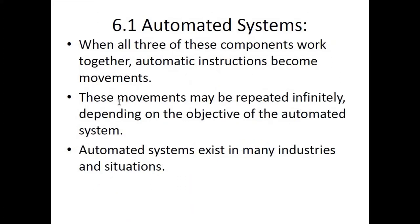When all three components work together, automatic instructions become movement, and these movements may be repeated infinitely depending on the objective of the automated system. For example, if it is built for packaging processed goods in a factory, it would just keep doing so. Automated systems exist in many industries and situations.